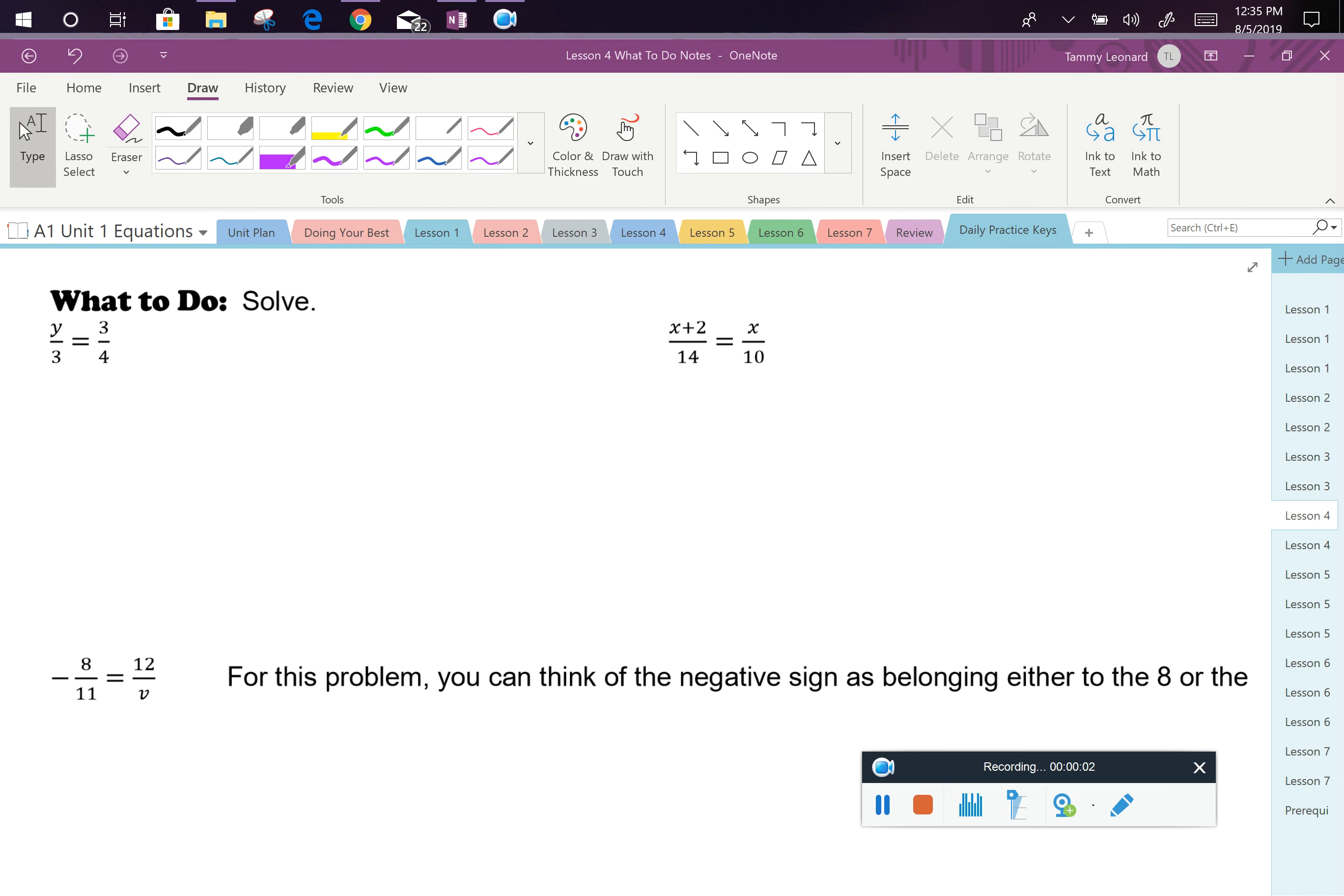Using the idea of cross products, we can take these two products and create a new equation that makes this proportion easier to understand. 3 times 3 is 9, which will be equal to y times 4, or 4y.